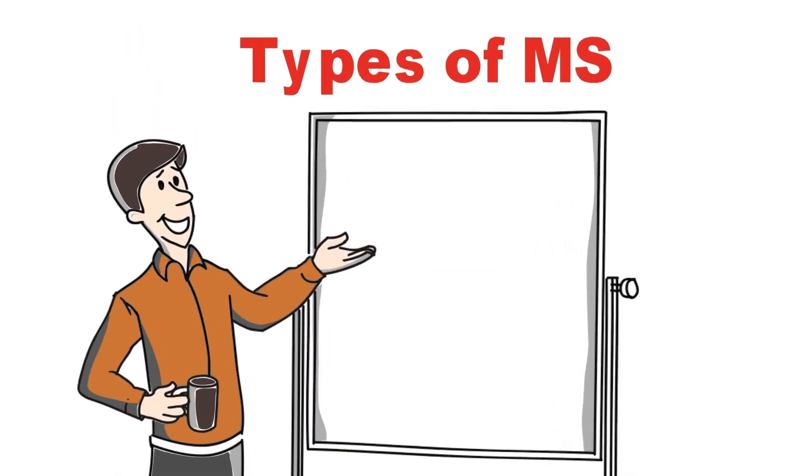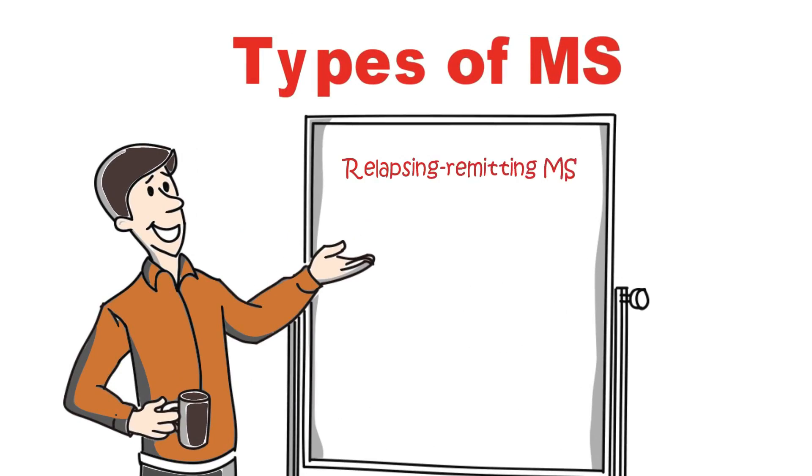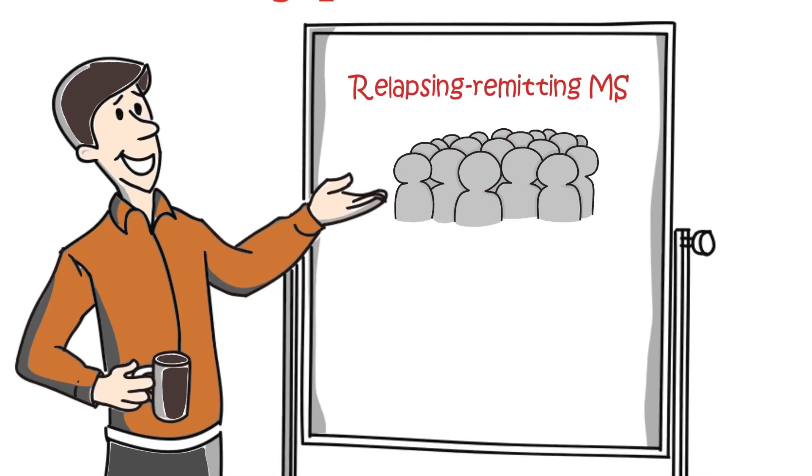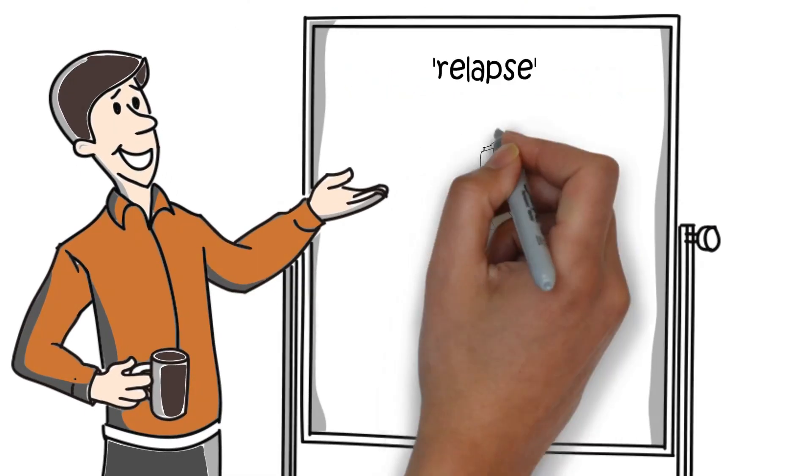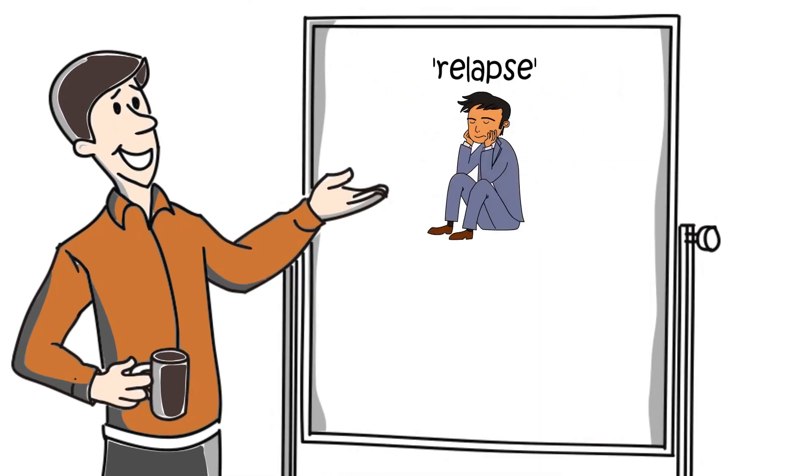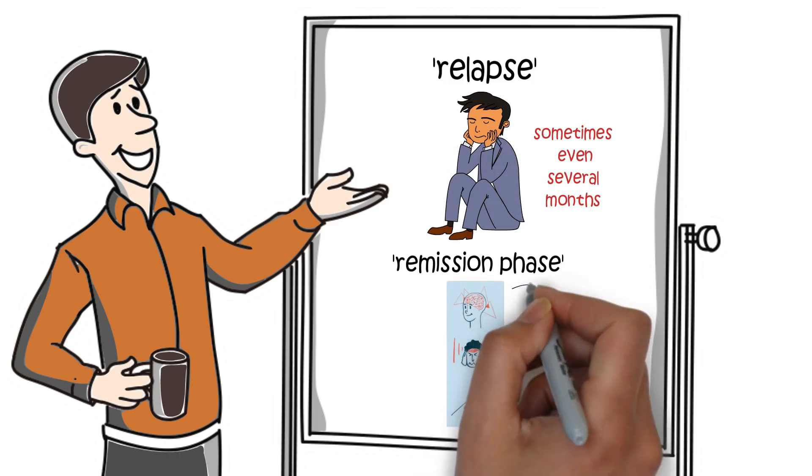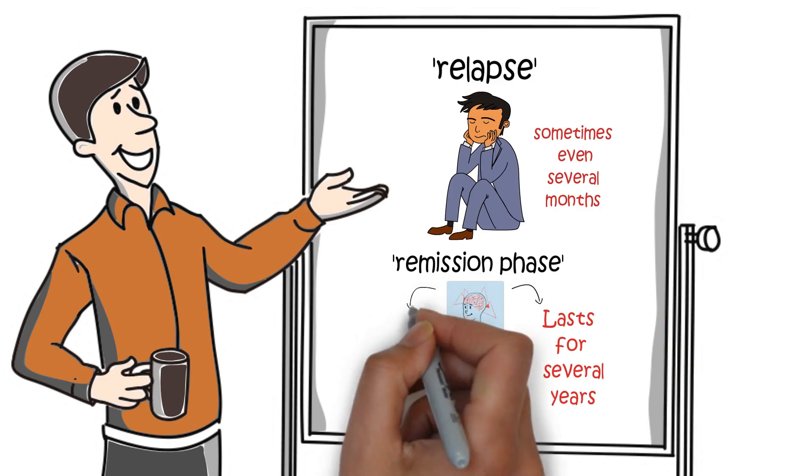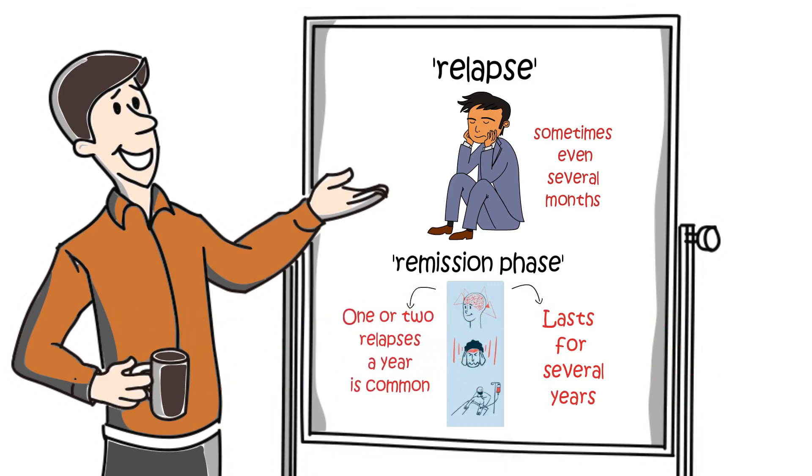Types of MS. The most common type of MS is relapsing remitting MS. Nearly 9 in 10 people have this form of the disease. A relapse means that symptoms develop and may last for days to weeks and sometimes even several months. After this you enter the remission phase where the symptoms ease or resolve. This relapsing remitting MS pattern usually lasts for several years and having one or two relapses a year is common.